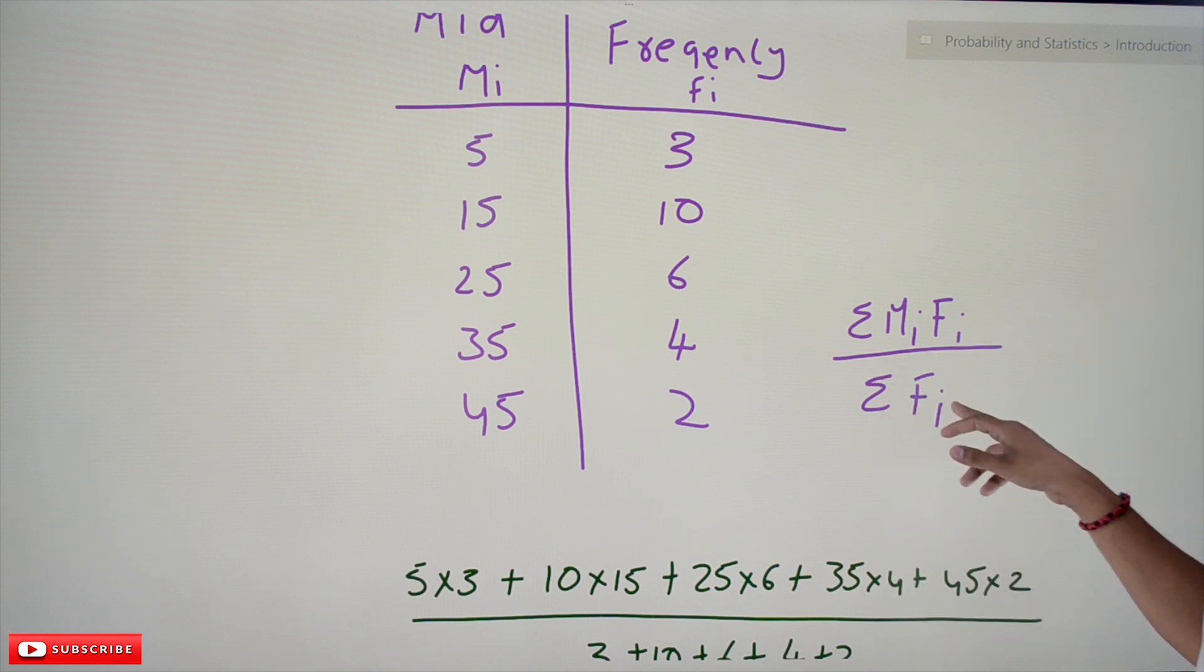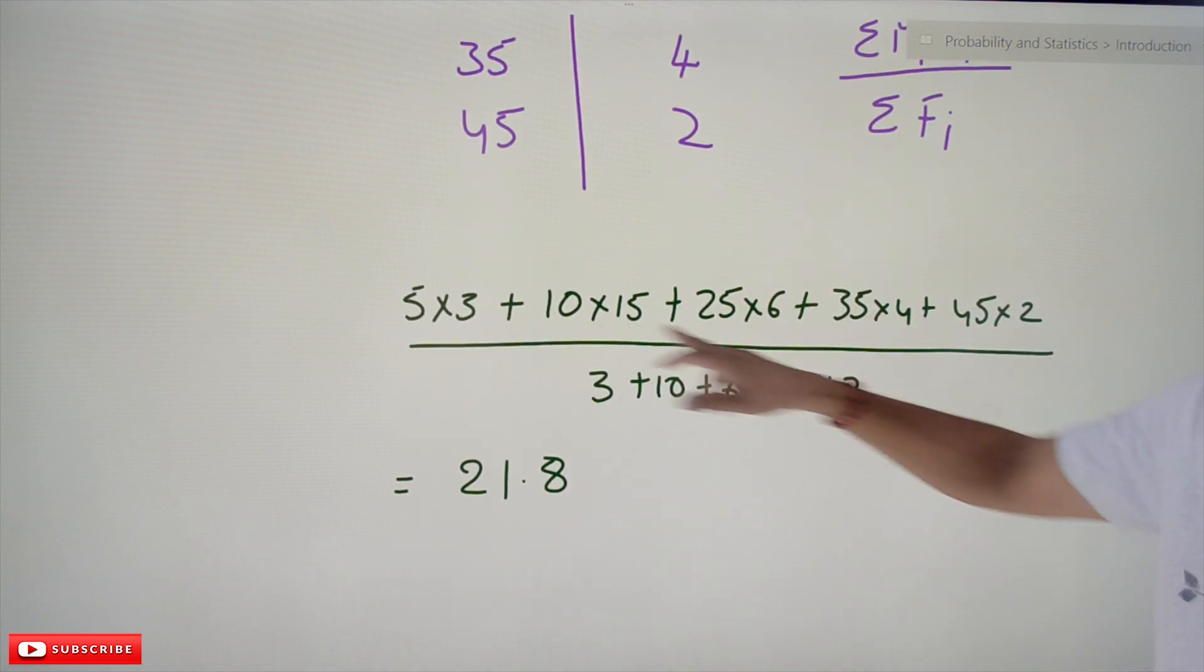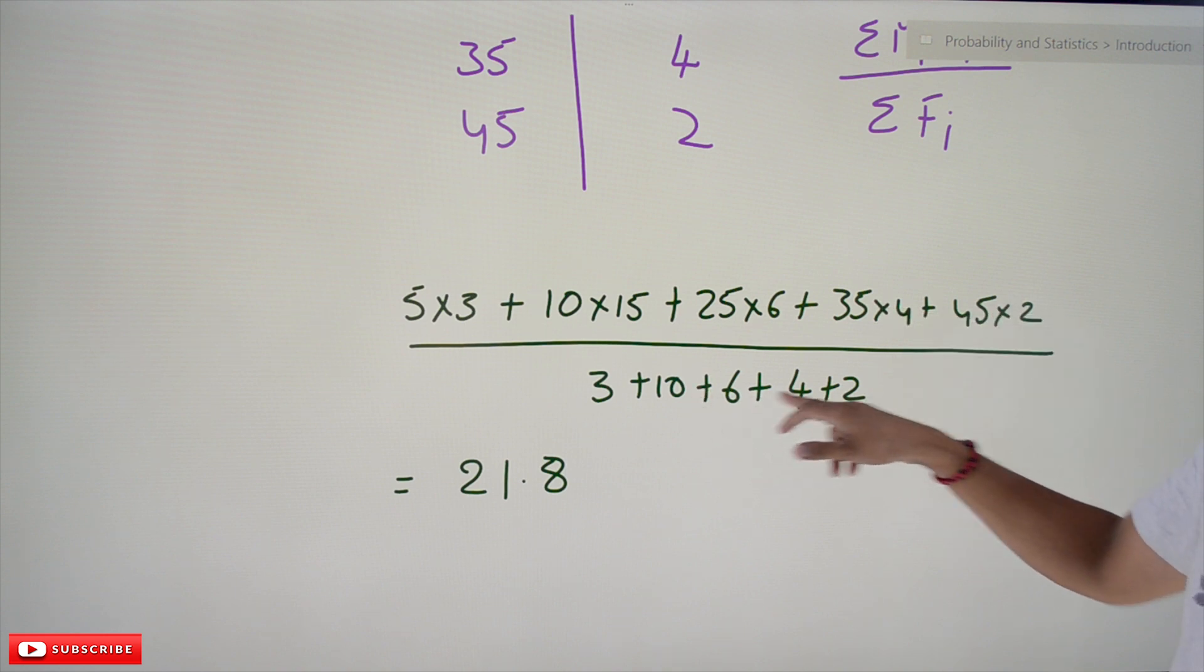This is the equation which we use. So this is how we got 5 into 3 plus 10 into 15 plus... divided by 3 plus 10 plus 2. The final value is 21.8.